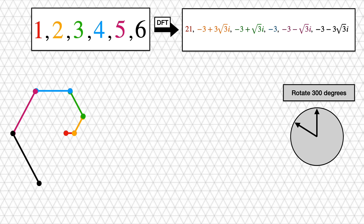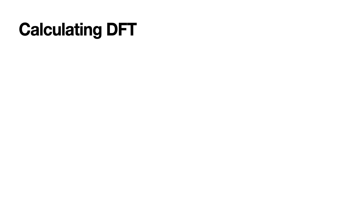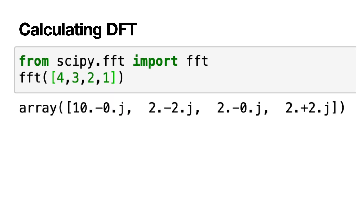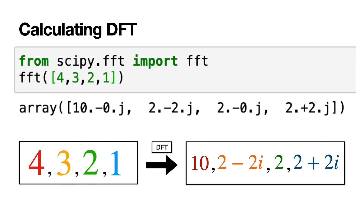This looks like a complicated process, but in practice I use Wolfram Alpha, which is really good for calculating this. Another tool is the FFT function in SciPy in Python — it gives the exact same solution as rotating these bars. You may notice that Wolfram and SciPy give different answers because one is scaled differently. The version we're using in this video is the one from the SciPy FFT.